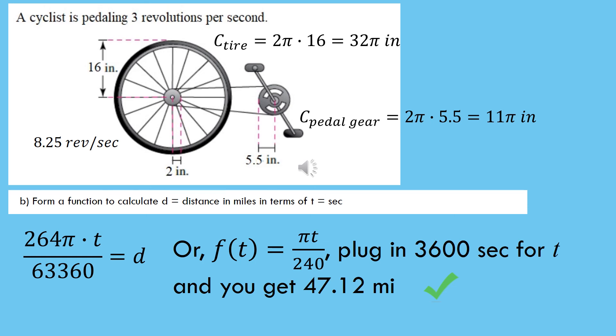If we put in 3,600 seconds — i.e., one hour — we get 47.12 miles. So once again we have the correct function; it checks out.